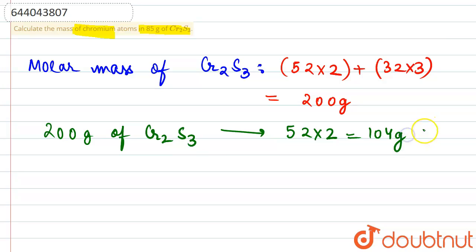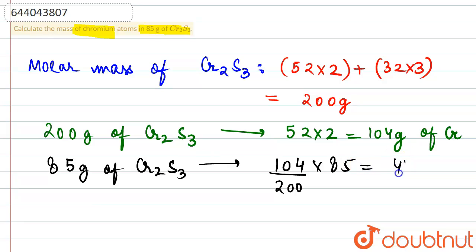So, 85 grams of chromium sulfite will be having how much mass of chromium? That is very simple: 104 divided by 200, multiplied by 85, comes out to be 44.2 grams.